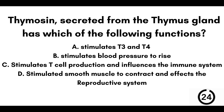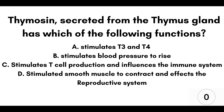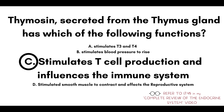Question number fourteen: thymocin, secreted from the thymus gland, has which of the following functions? A) Stimulates T3 and T4. B) Stimulates blood pressure to rise. C) Stimulates T cell production and influences the immune system. Or D) Stimulates smooth muscle to contract and affects the reproduction system. Our answer here is C — it stimulates T cell production and influences the immune system.